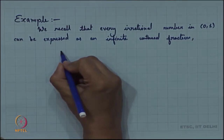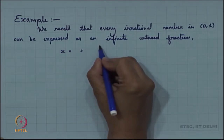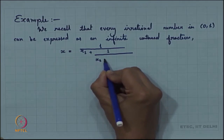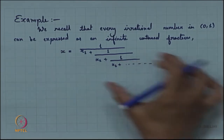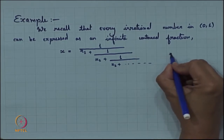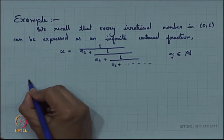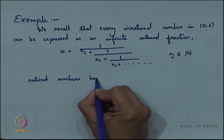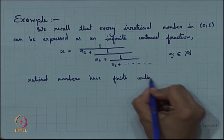If x is an irrational number in (0,1), we can express it as x = 1/(x_1 + 1/(x_2 + 1/(x_3 + ...))). Every irrational number in (0,1) can be expressed as an infinite continued fraction, where all x_j are elements of the natural numbers. For rational numbers, the continued fraction is finite — it does not go on indefinitely, and they can be expressed as a finite sequence.